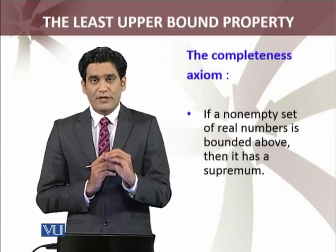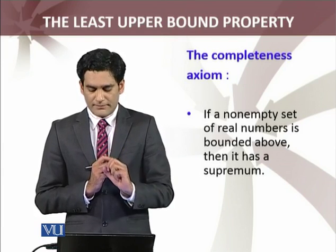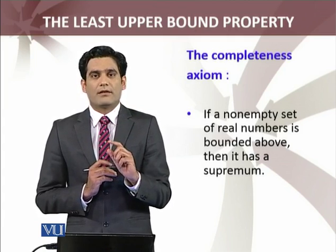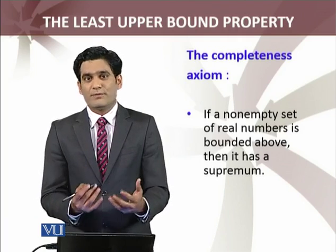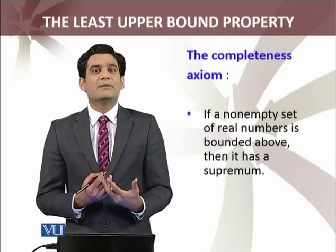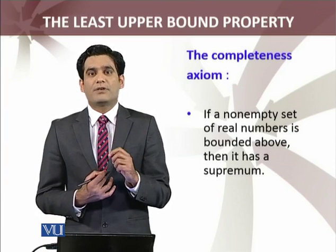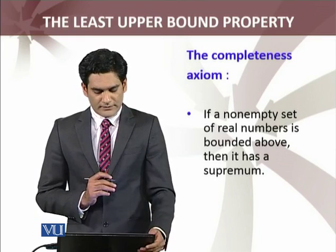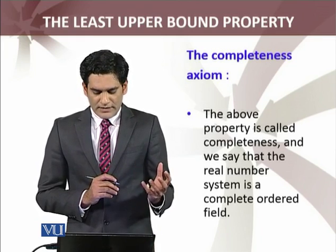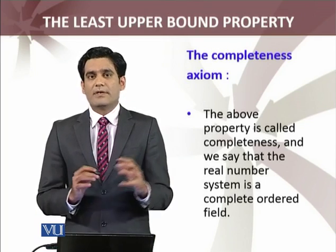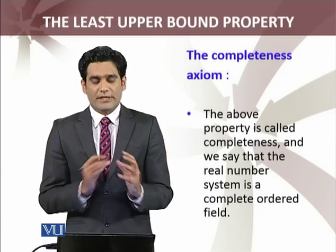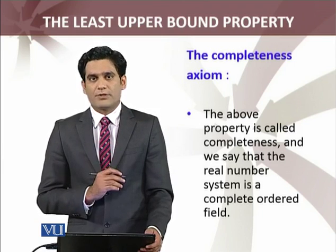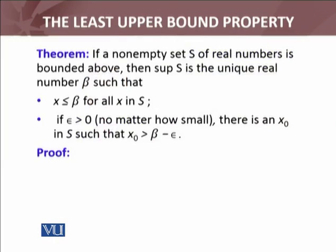The completeness axiom is actually the least upper bound property. If a non-empty set of real numbers is bounded above, then its supremum exists in the real numbers — and it will be in the real numbers, because we have defined the set of real numbers by this theorem as an ordered field which satisfies the least upper bound property. So for any subset, its supremum will be in the real numbers. This property is called completeness, and we say that the real number system is complete.